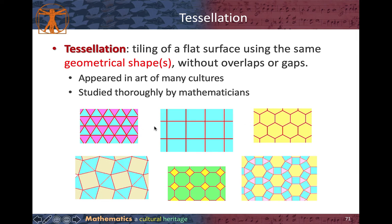These three examples use only one kind of shape. This one makes use of squares and triangles, this one squares and octagons, and this one squares, triangles, as well as hexagons. So these first examples use two different shapes, and this last one makes use of three different shapes.